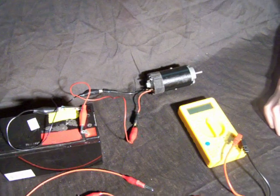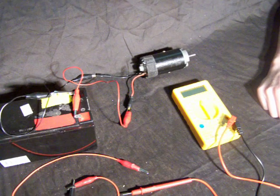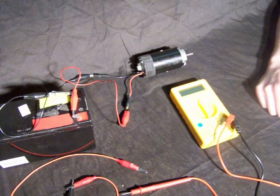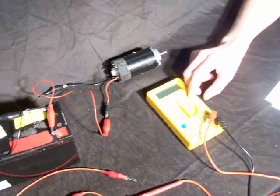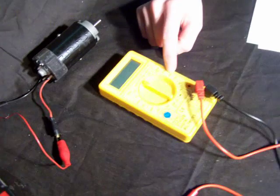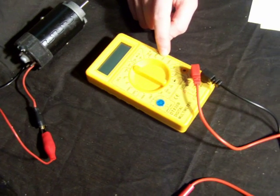First you need to review the instructions for your multimeter and follow those instructions carefully. This multimeter is only capable of reading 200 milliamps through the fused connection.